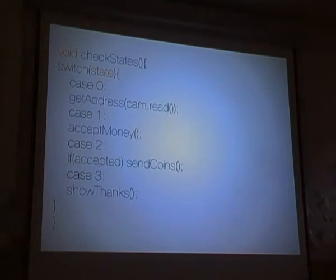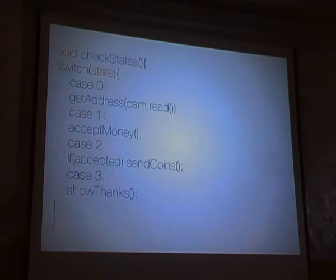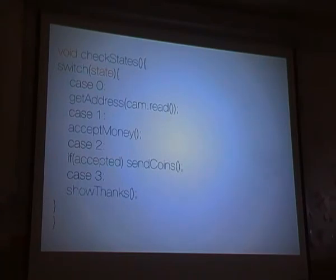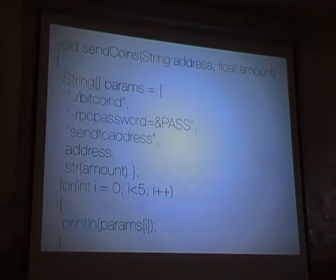What happens in the check state? If it's in default mode, it will just try to get a QR code from the camera. If it's in state 1, it starts to accept money — a signal will be sent to an Arduino and it starts receiving messages about how much money is thrown in. When it's moved to case 2, as soon as there's money in the machine and somebody presses accept, it will send the coins and you will get a small notification. When that's done, it will show some things.